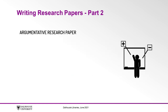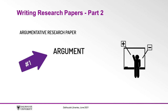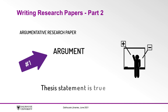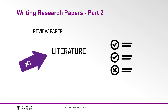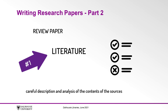In an argumentative research paper, the argument is primary. Everything in the paper is arranged to show the thesis statement is true. In a review paper, on the other hand, the literature is primary. The writer's judgments emerge only after a careful description and analysis of the contents of the sources they have consulted.